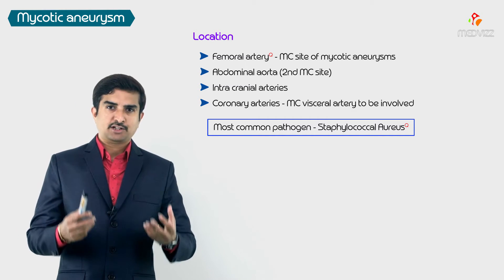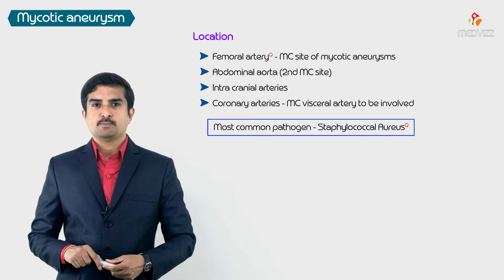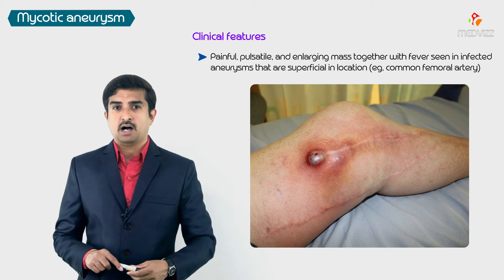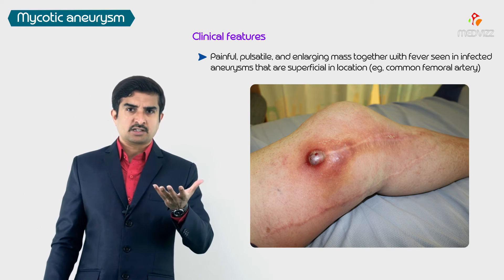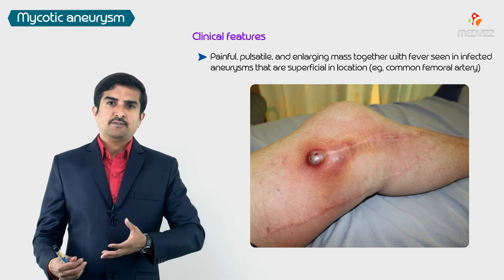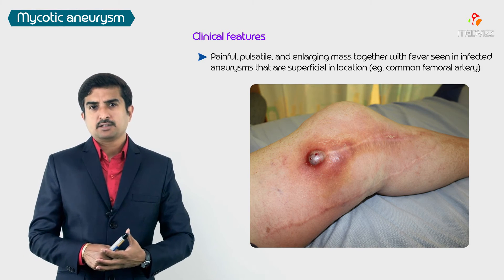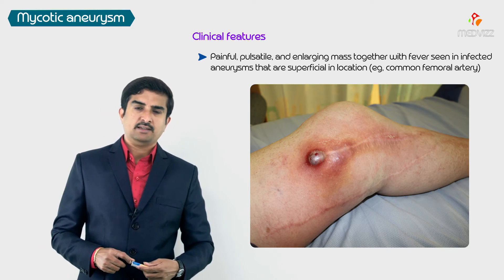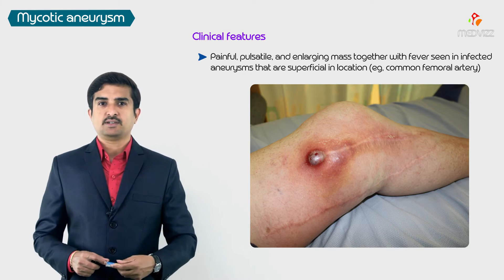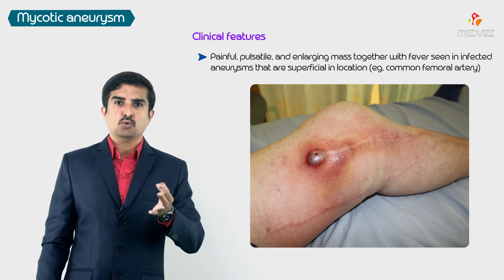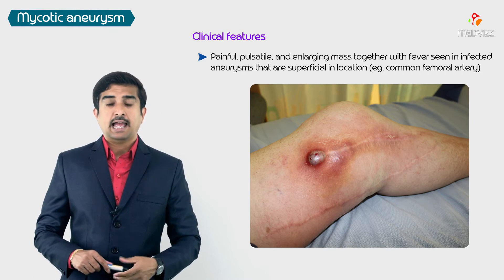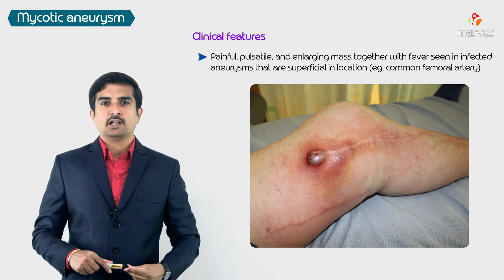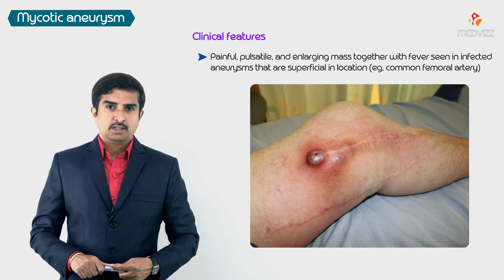The classical presentation of an infected aneurysm — whether bacterial or fungal, though most commonly bacterial — is a painful, pulsatile, and enlarging mass together with systemic features of infection such as fever. Whenever a pulsatile mass is associated with fever and other systemic features, you should consider an infectious or mycotic aneurysm. This presentation is especially found in superficial aneurysms, such as those involving the femoral artery.